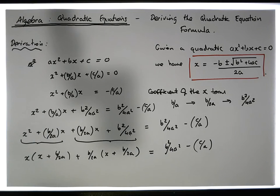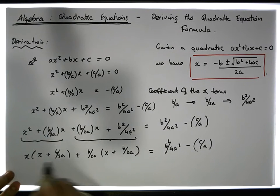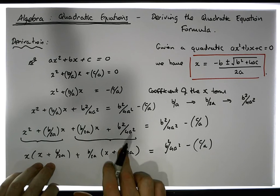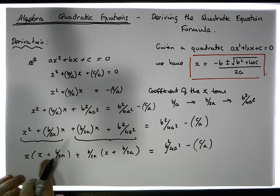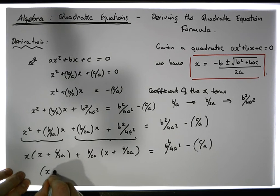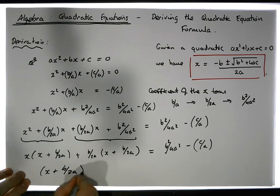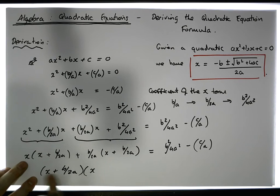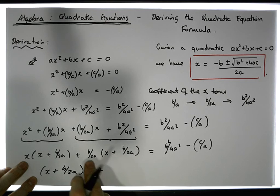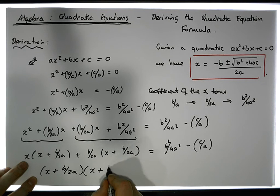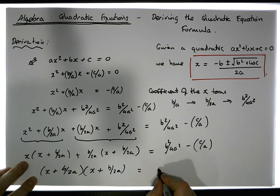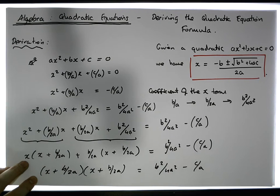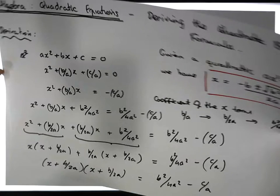Now looking at these two terms, there's a commonality — the (x + b/2a) appears here and again here. So let's factor that out: (x + b/2a), and what's left behind is x from the first term, plus b over 2a from the second term. This must be equal to b squared over 4a squared minus c over a.